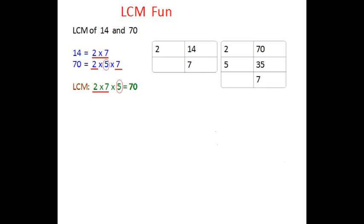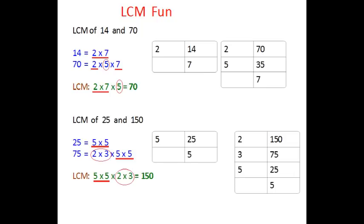Take the other numbers, 25 and 150. Again, these two fives are common, so take those two fives only once: 5 multiplied by 5 multiplied by 2 and multiplied by 3, the remaining factors. The answer comes out to be 150.